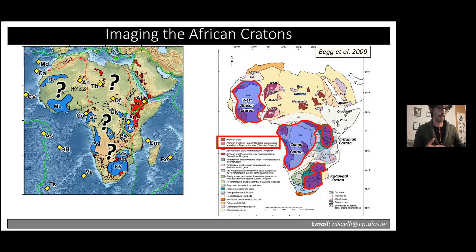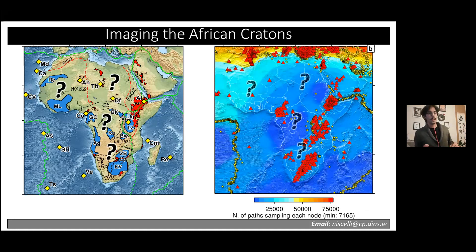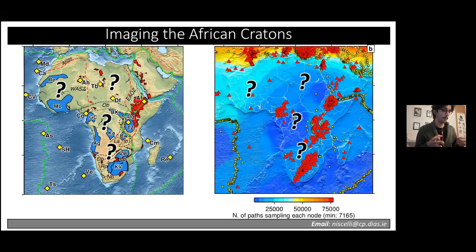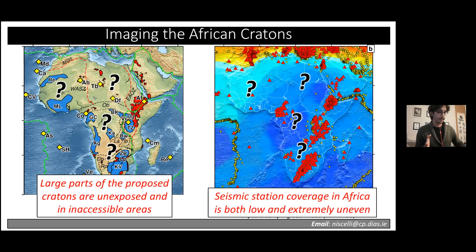Comparing this with the location of seismic stations, which form the basis for most geophysical studies sampling the cratons on the continent, we can see that many of these question marks align fairly well with areas where we actually have very little information and station availability. This highlights the simultaneous lack of surface geology data in these basins and the lack of seismic stations.